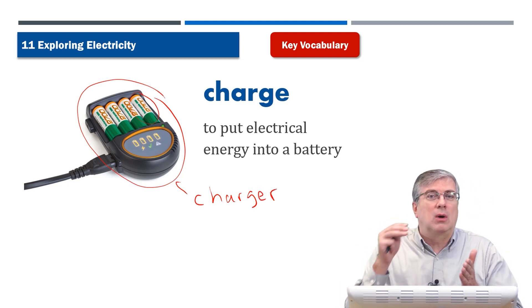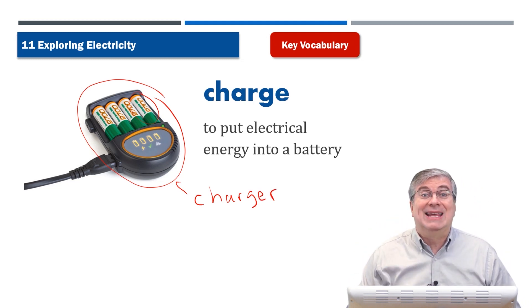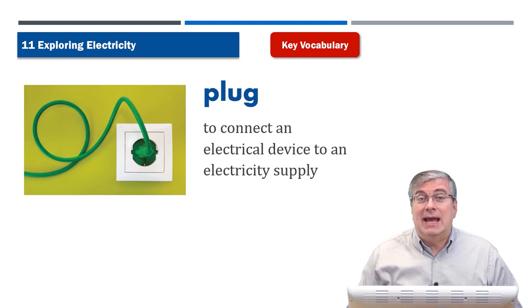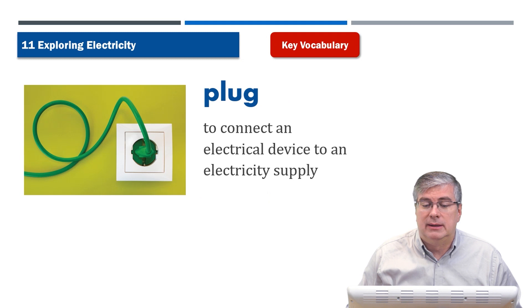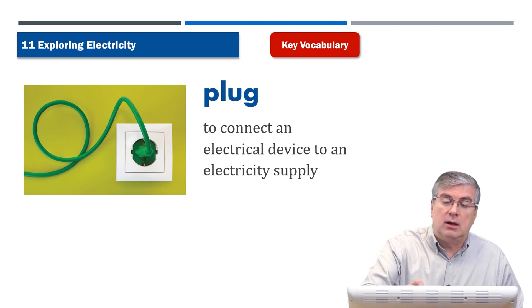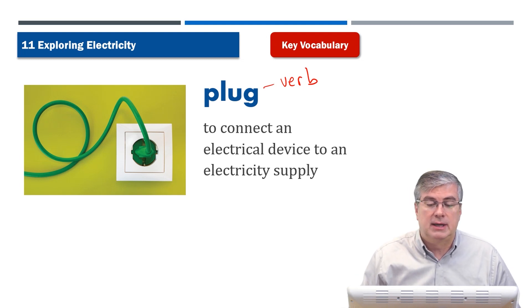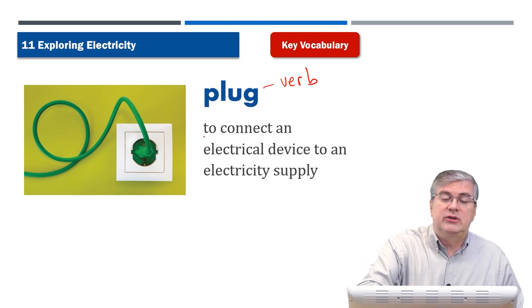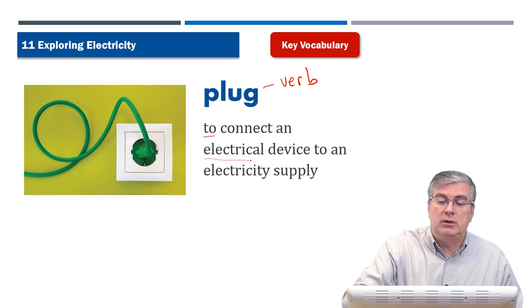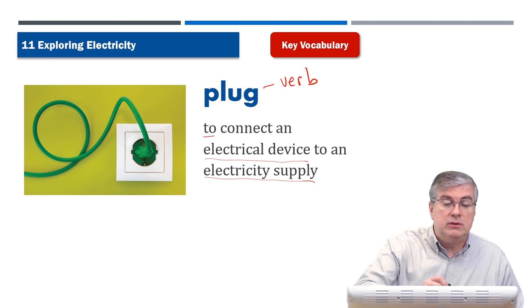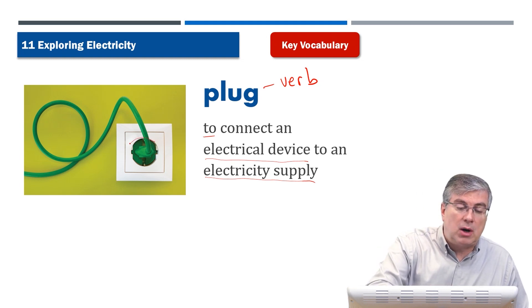Next we have 'plug.' Plug here is a verb, but it can also be a noun — I'll explain in a few seconds. As a verb, plug means to connect an electrical device to an electricity supply. How do you do that? Well, you see this green part here...